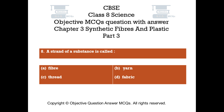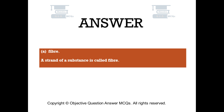Question number eight. A strand of a substance is called: Option A: fiber. Option B: yarn. Option C: thread. Option D: fabric. The right answer is option A — fiber. A strand of a substance is called a fiber.